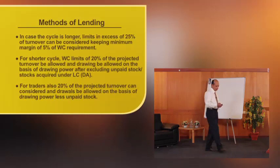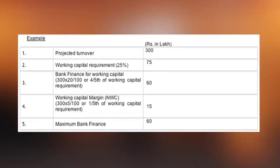Let us look at an illustration. The projected turnover of the unit is estimated at rupees three hundred lakhs. Under the turnover method we discussed, the working capital requirement is to be taken as twenty-five percent of the gross turnover. The gross turnover is taken at rupees three hundred lakhs. So what is the total working capital requirement? Twenty-five percent of three hundred comes to rupees seventy-five lakhs.